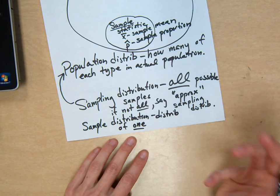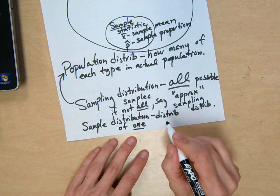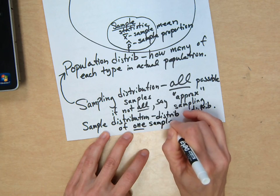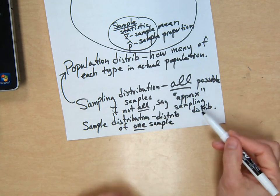As opposed to a sampling distribution, which is all possible. Or you can have an approximate.